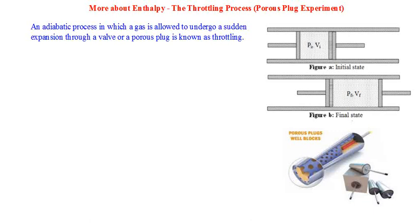We have already discussed the concept of enthalpy and introduced it as one of the thermodynamic potentials, represented by H. Now we will try to understand more about the properties of this quantity. We will start by explaining a historical experiment named the porous plug experiment, otherwise known as the throttling process.